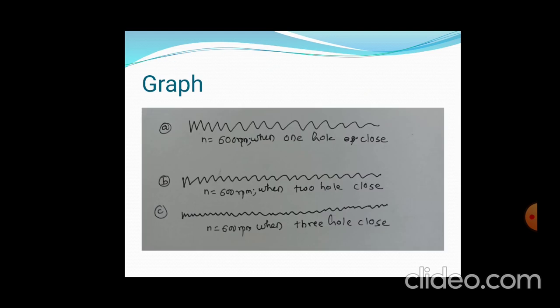This is the particular graph obtained after the experiment. When one hole is matching, we get a different amount of damping — that is, less damping and maximum amplitude. When two holes match, again there is less maximum damping provided and less amplitude obtained. When three holes close, the damping is more and amplitude is less.